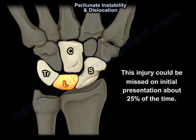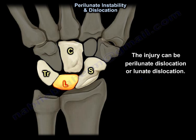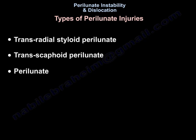This injury can be missed on initial presentation about 25% of the time. The injury can be perilunate dislocation or lunate dislocation. The types of perilunate injuries include transradial styloid perilunate, transscaphoid perilunate, or perilunate.